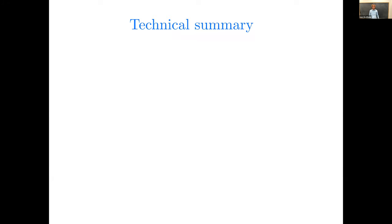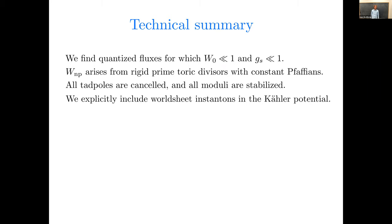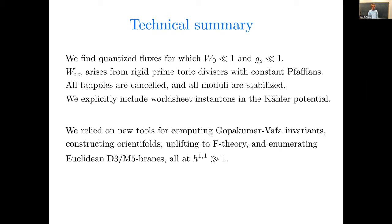And so finally, a more technical summary, what do we actually do concretely? We find quantized fluxes for which the Gukov-Vafa-Witten flux superpotential is small and the string coupling is small. The non-perturbative superpotential arises from rigid prime toric divisors with constant Pfaffians. All tadpoles are cancelled, all the moduli are stabilized, and we explicitly include the leading corrections, which are world-sheet instanton terms in the Kähler potential. To do this work, we relied on a bunch of new computational tools for obtaining GV invariants, for constructing orientifolds, for uplifting to F-theory, and for enumerating Euclidean branes, all at large H11, so in the topologically complex realm.